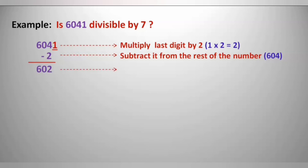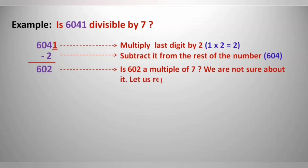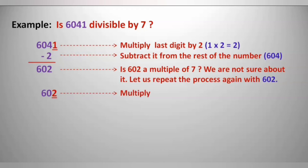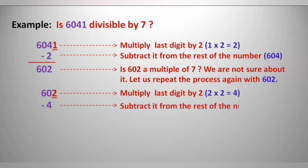So let us repeat the process again with the number 602. Take the last digit, which is 2, and multiply with 2 — that is 2 multiplied by 2, which is 4. Now subtract this 4 from 60, the rest of the number, which gives us 56. We know that 56 is exactly divisible by 7.